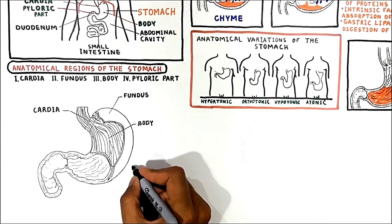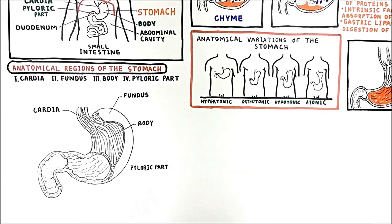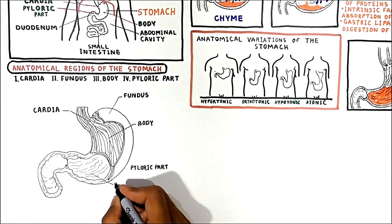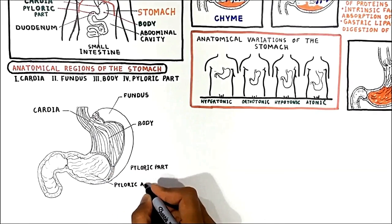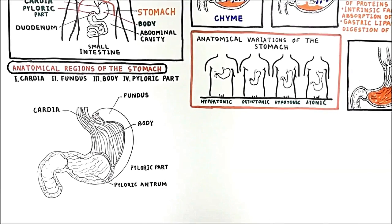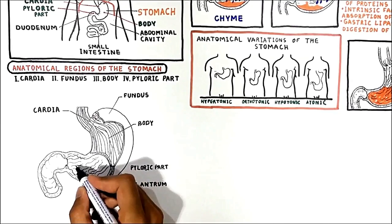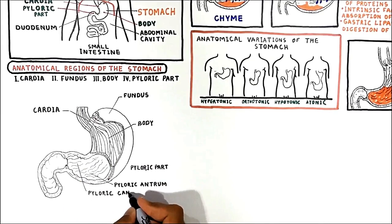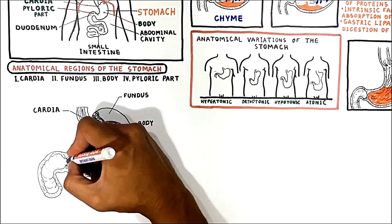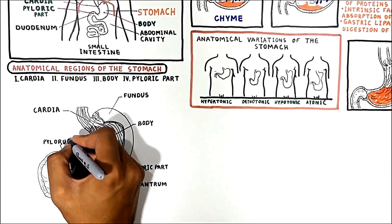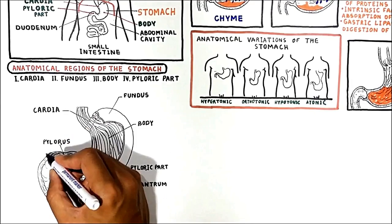The pyloric part is divisible into three regions. The first region, the pyloric antrum, connects to the body of the stomach. The second region is the pyloric canal, which leads to the third region, the pylorus, which in turn connects to the duodenum.